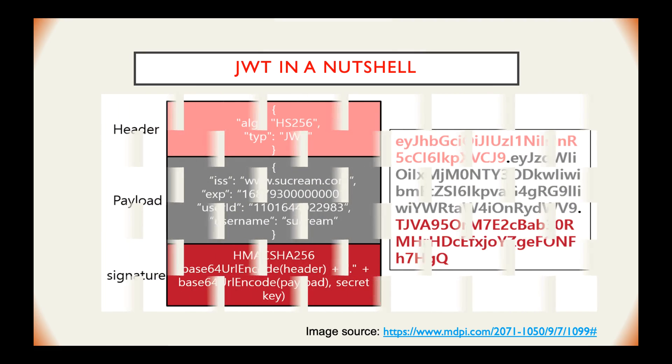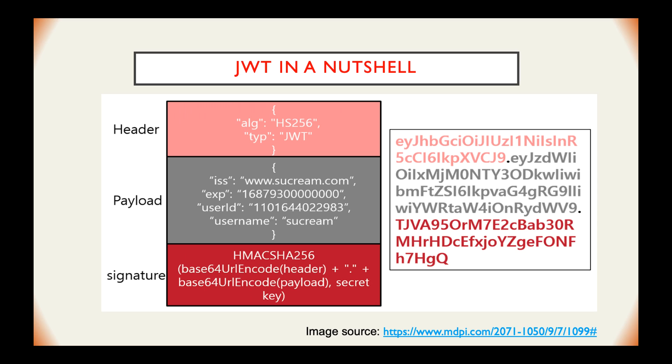Internally, a JWT looks something like this. It has a header, which includes the algorithm value that states how the token was signed or encrypted, the payload which contains the JSON data, and the signature. The entire token is encoded with the Base64 algorithm.